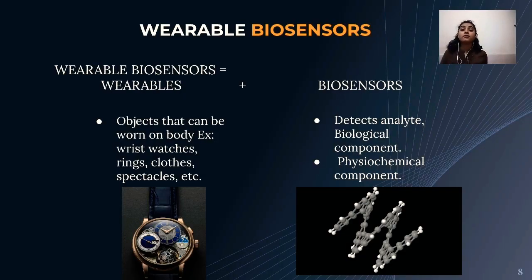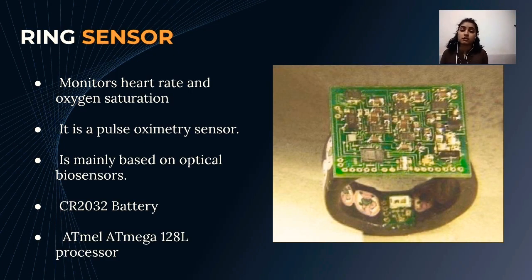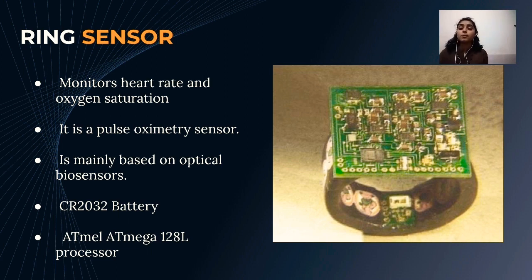Wearable biosensors combine wearable objects with biosensor technology. The first type is the ring sensor, which monitors heart rate and oxygen saturation. It is a pulse oximetry sensor mainly based on optical biosensors. It can be worn as a ring on the finger for a long time, is easy to use, enables continuous monitoring, and reduces hospitalization fees.